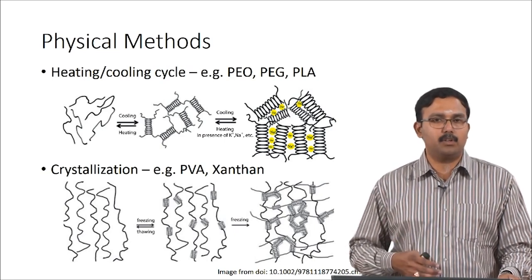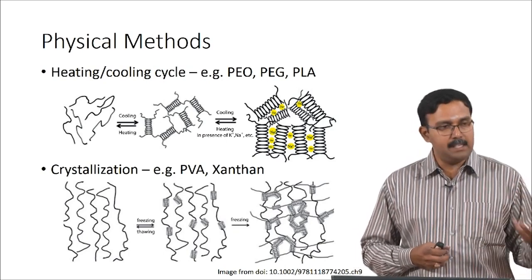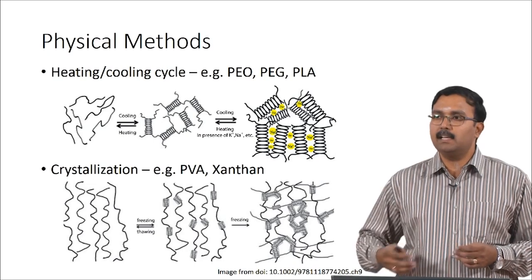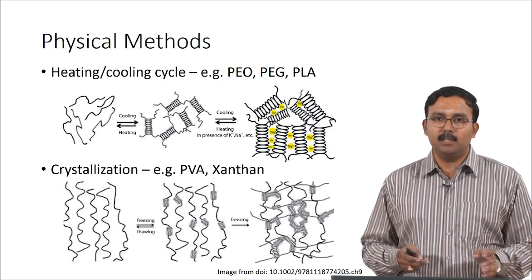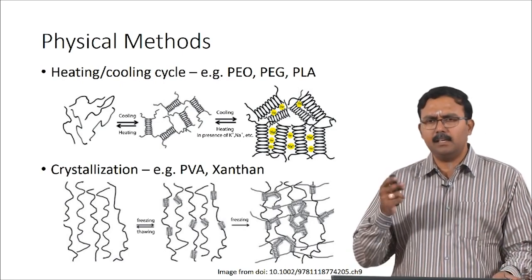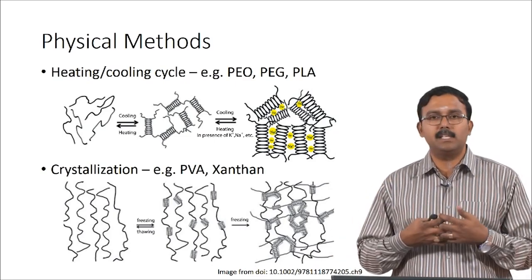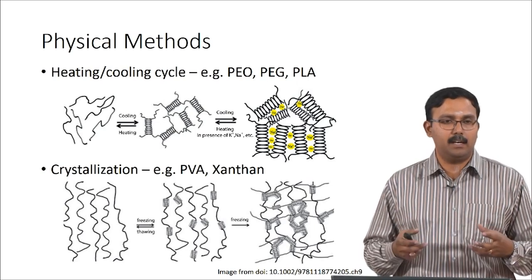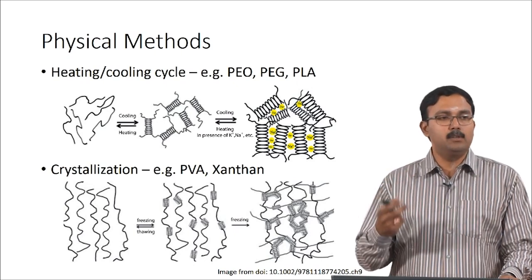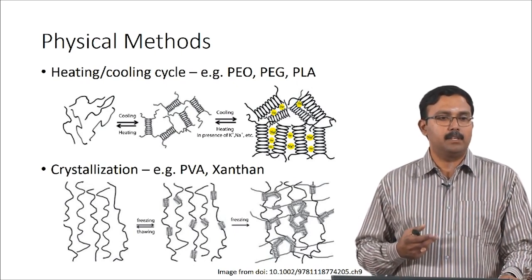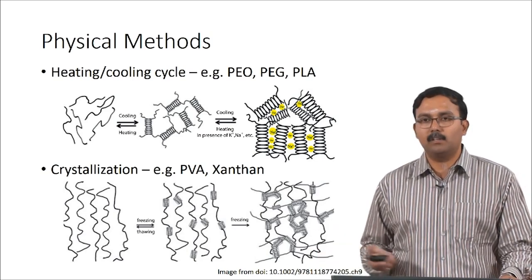Crystallization is another common method used for crosslinking PVA and xanthan. Here, the polymer solution is frozen and then thawed, and this is repeated multiple times so that coils are formed. Finally, it is frozen so that these coils interact with each other and form a very strong hydrogel. Crystallization can actually provide reasonably good mechanical strength — in many cases even better than chemical crosslinking.